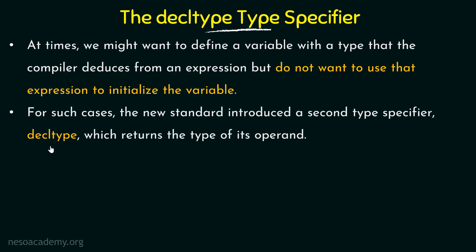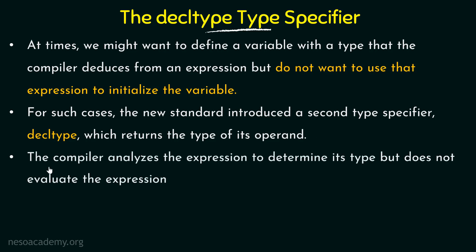Decltype is something we have from the new standard of C++, and what it does is return the type of the operand. The compiler will analyze the expression to determine its type but it does not evaluate the expression. It will just analyze the expression and see what type it would return if evaluated, and that type will be applied to the variable where we are applying decltype. Remember that this was introduced since C++11 and was not available in older versions.